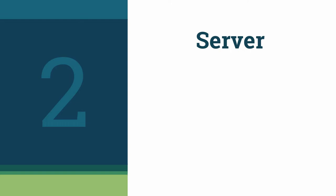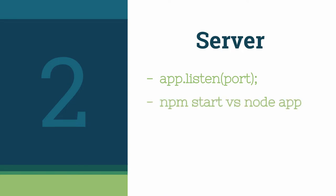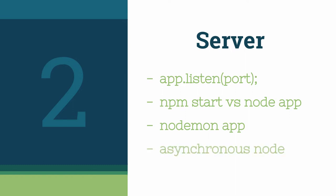In this video, we'll discuss how to set up an Express server. First, we'll see how to easily create a server by using the listen method. Next, we'll look at some different ways that we can start our Express server. We'll learn how to configure nodemon to auto-restart our server on file changes. Finally, we'll introduce the concept of asynchronous programming.